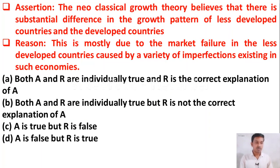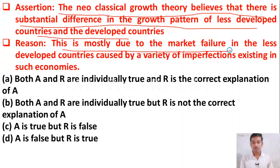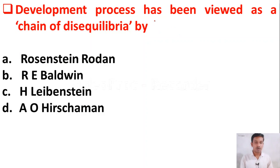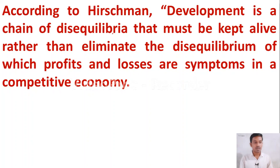The next question is assertion and reasoning. Assertion: the neoclassical growth theory believes there is substantial difference in the growth pattern of less developed and developed countries. Reason: this is mostly due to market failure in less developed countries caused by a variety of imperfections in such economies. The right answer is option A — both assertion and reason are true, and the reason is the correct explanation of the assertion.